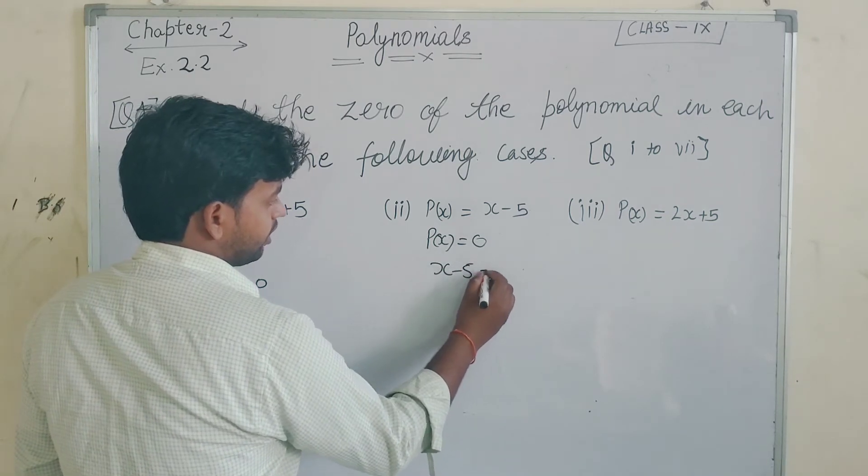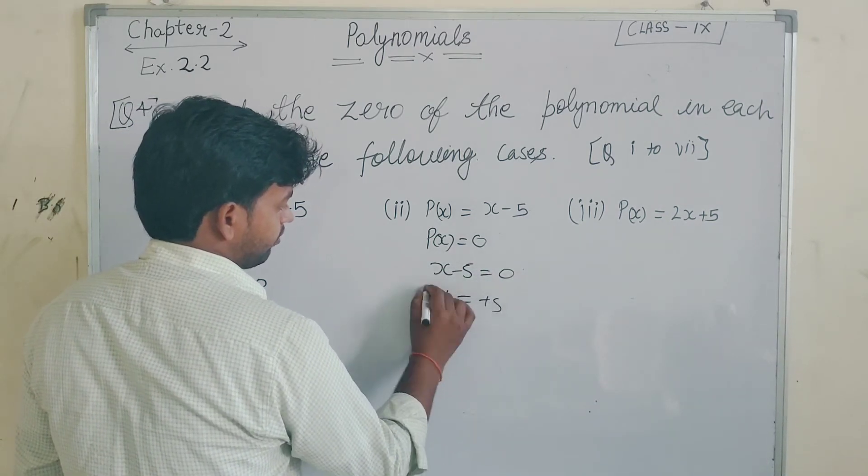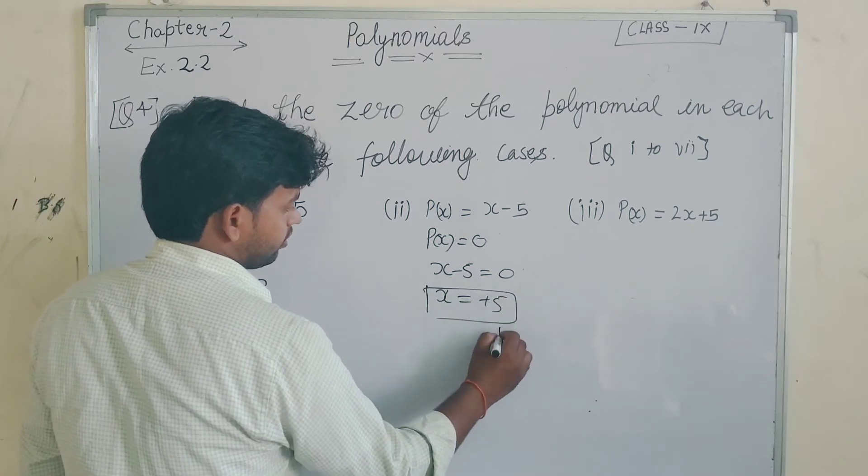So, x minus 5 is equal to zero. Then x is equal to plus 5. This is the answer.